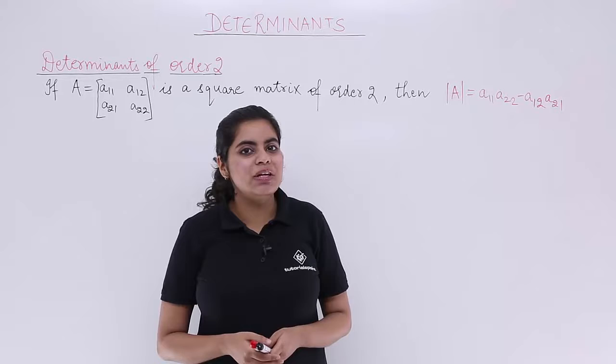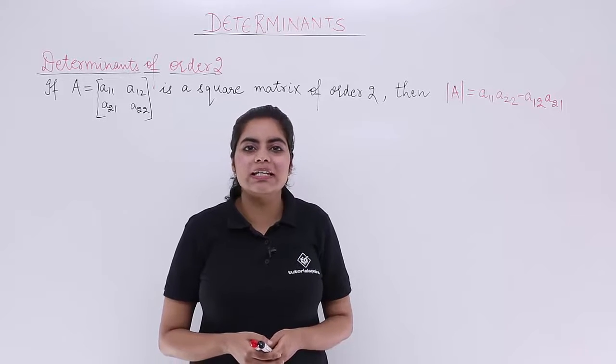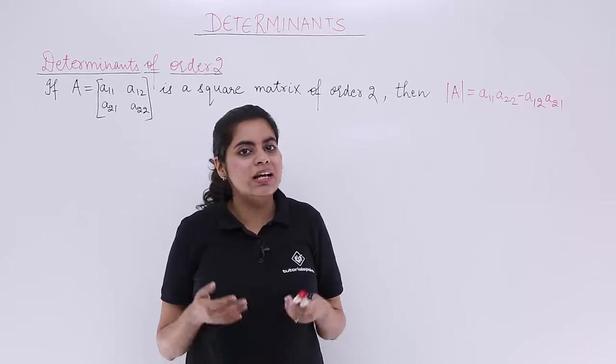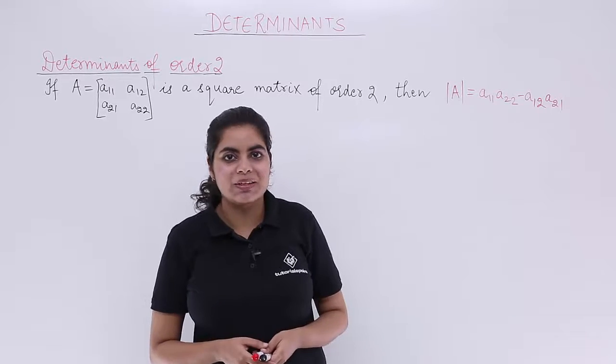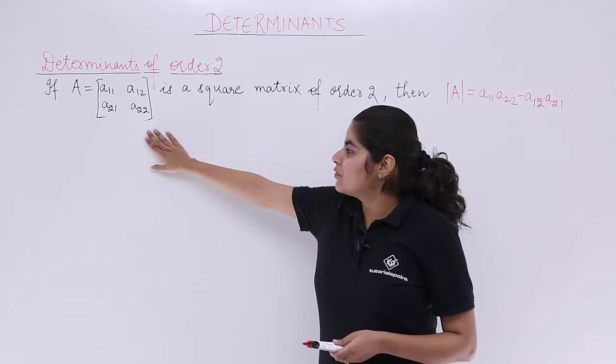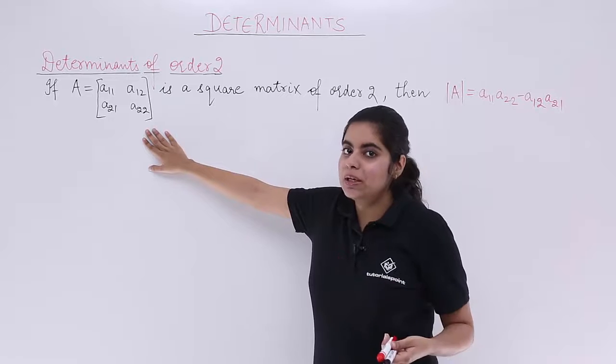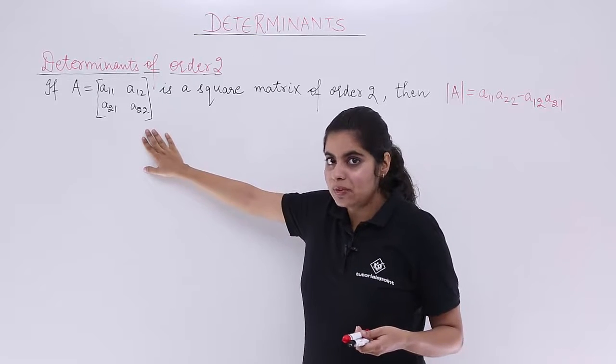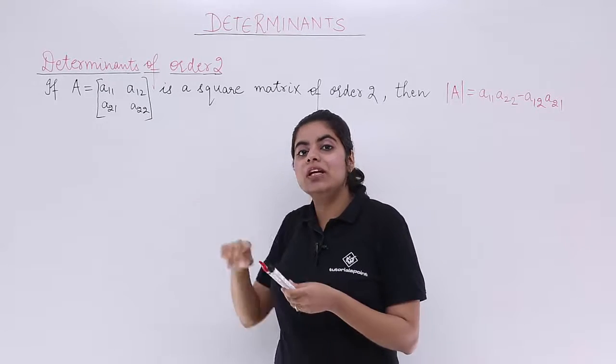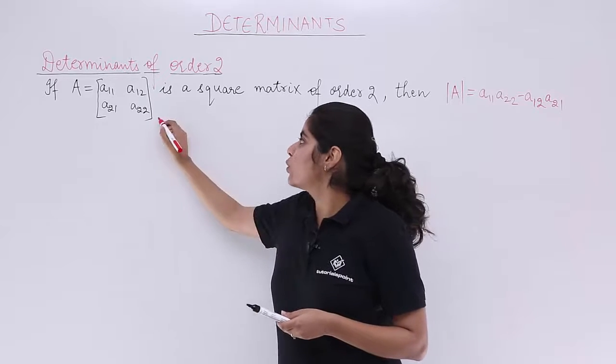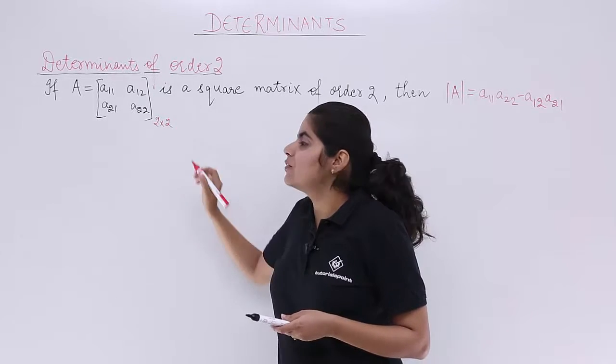In this case we have a 2 by 2 matrix, that is a square matrix of order 2, and let's see how to compute the determinant value. So I have now a determinant value to be computed for a matrix A and that matrix is having two rows, two columns, so it is a 2 by 2 matrix.